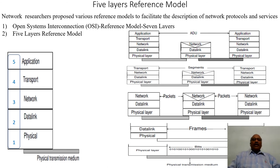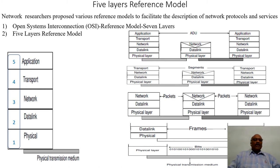Looking at the operations of services and protocols, network researchers have proposed various reference models to facilitate the network protocols and services. The network researchers have logically proposed a model called Open Systems Interconnection, which is a standard model consisting of seven layers. These layers correspond to various methods that are carried out before transmitting data to the other end. The data that needs to be transmitted gets transformed into an appropriate form so that proper data transmission takes place.